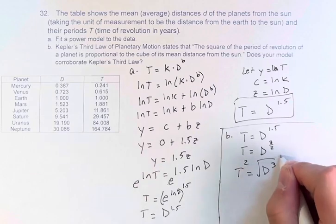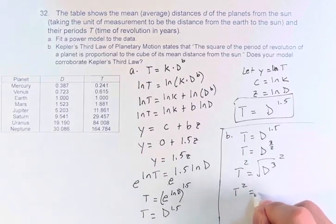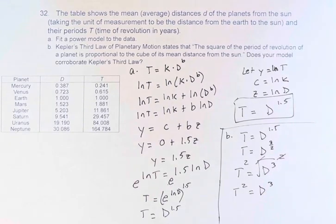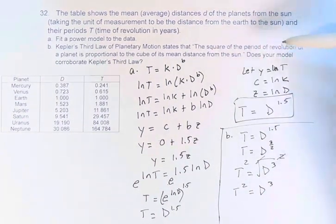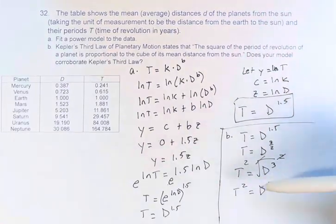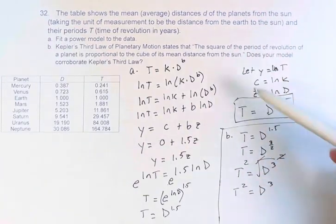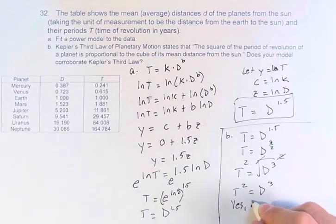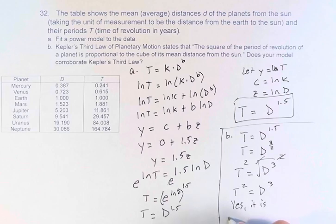If we square both sides, t squared is equal to the square root of something squared is just the thing itself. So d cubed. And we can see here that the square of the period of revolution, t squared, is proportional to the cube of its mean distance from the sun, d cubed. So we can say, yes, it is corroborated.